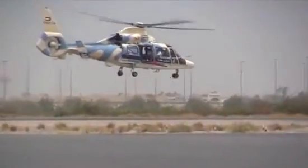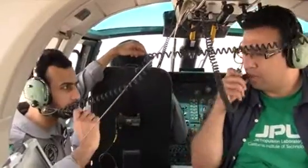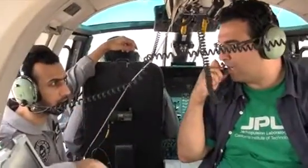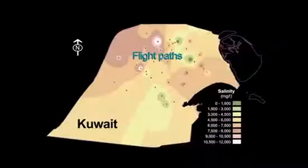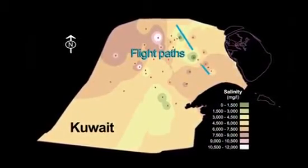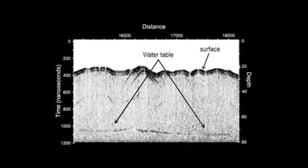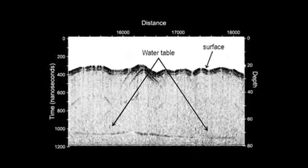To our big surprise, we were able to find these aquifers. We were able to map the depth of the water table — the depth at which water changes in the subsurface. We were able to see recharge locations and discharge locations, and prove that we can use that radar technology from Mars to map water on earth on a large scale.